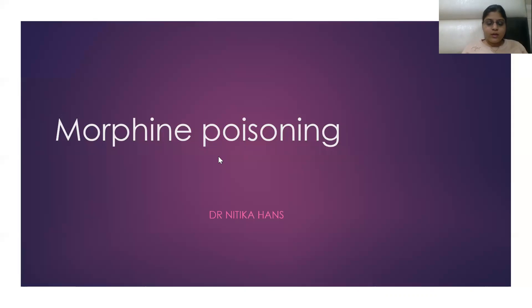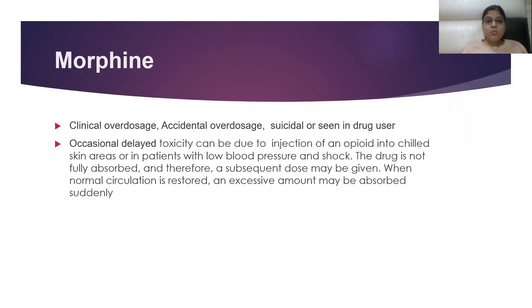Morphine Poisoning can occur as clinical overdose, accidental overdose, suicidal, or as seen in drug users. Morphine is a stronger analgesic drug used to treat very strong pain like cancer pain or pain of myocardial infarction. So clinical overdoses can occur, accidental overdoses can occur. The patient can take more Morphine to produce analgesia, or it can be suicidal, or it can be taken by drug addicts — tramadol or heroin injections, tablets, and capsules are available — and the drug users take the morphine and opioids, which can lead to poisoning.